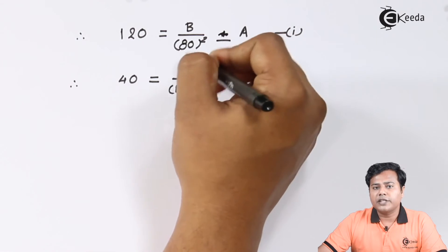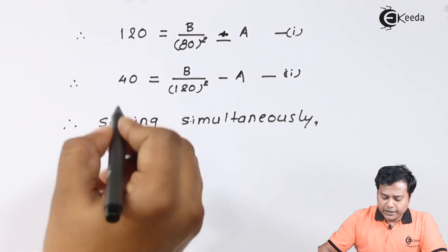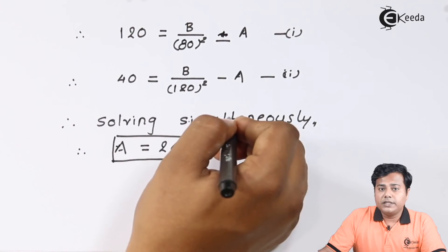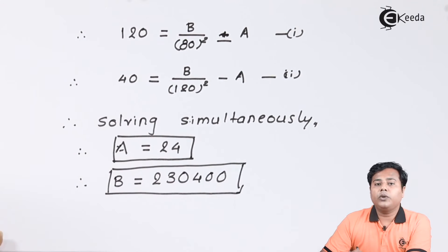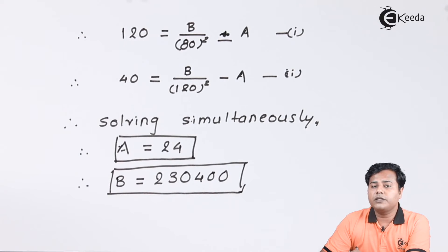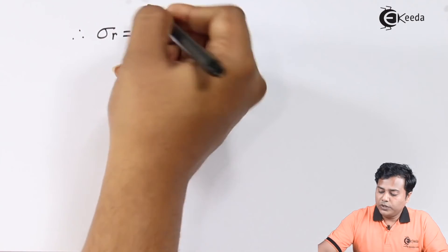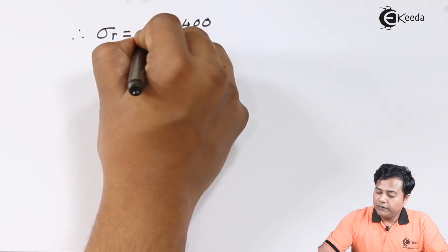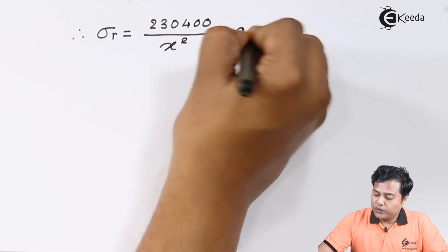Solving simultaneously, we get the value of A equal to 24 and the value of B equal to 230,400. So the radial stress expression becomes: Sigma R equals 230,400 divided by X square minus 24.